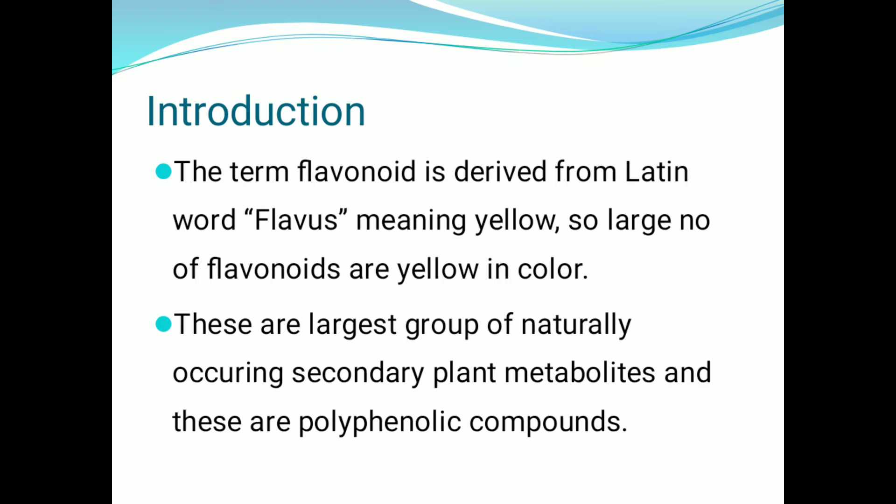Flavonoids are polyphenolic compounds and naturally occurring secondary plant metabolites. Phenolic compound means the OH group is directly attached to a benzene ring — such compounds are taken as phenolic compounds. Flavonoids contain this type of phenolic compound, and they are also secondary metabolites.